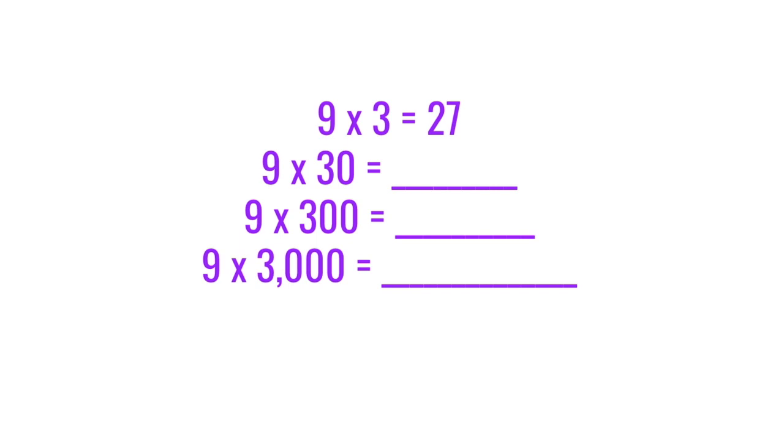First, we'll find the basic fact. We have 9 times 30. The basic fact would be 9 times 3. The same for the next one. 9 times 300, the basic fact would be 9 times 3. And the basic fact for 9 times 3,000 would also be 9 times 3. So 9 times 3 equals 27.